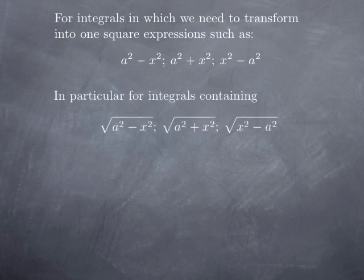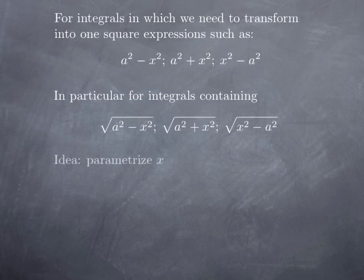In particular, when we have a square root of such an expression — such a difference or sum of squares — and if we can transform what's under the root as one square, then we have the square root of a square, which gives us the absolute value of what's under the root. The idea is to parameterize x as a trig function and then use an appropriate trig identity to transform our difference or sum of squares into one square.